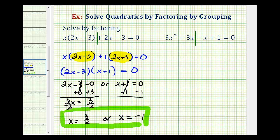Well the greatest common factor of 3x squared and 3x would be 3x. If we factor out 3x from the left side, we're left with x minus 1.